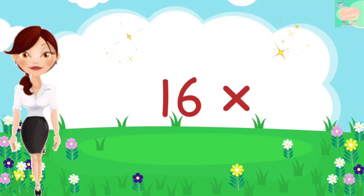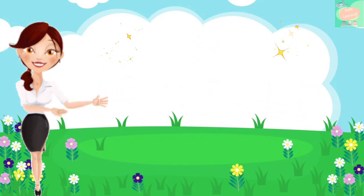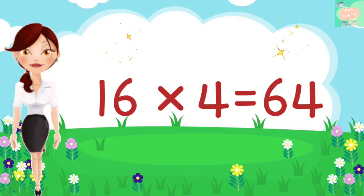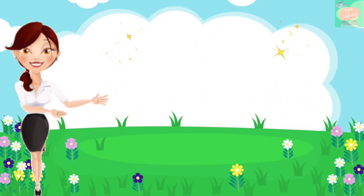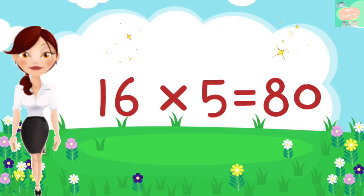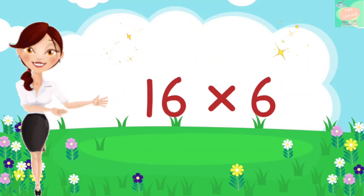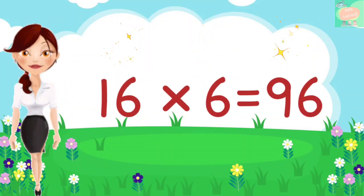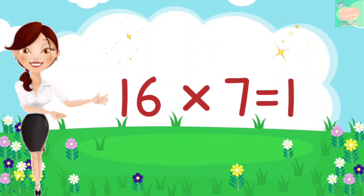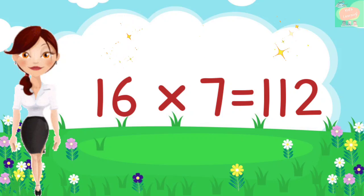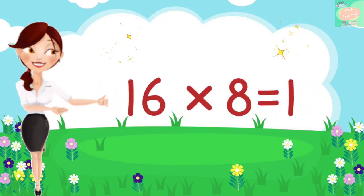16 threes are 48, 16 fours are 64, 16 fives are 80, 16 sixes are 96, 16 sevens are 112, 16 eights are 128.